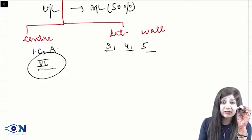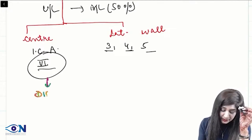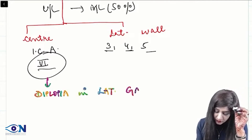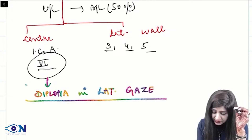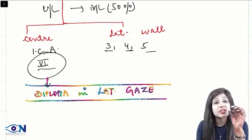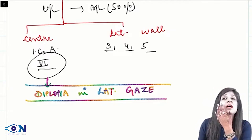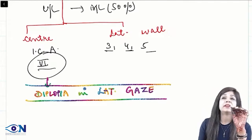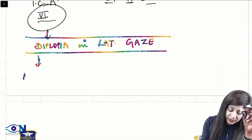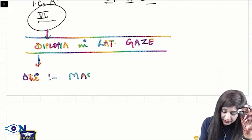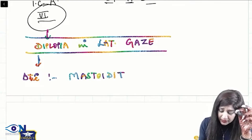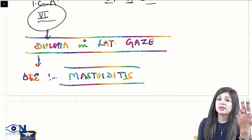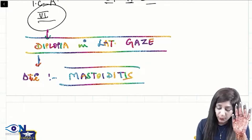The sixth nerve is the first to get affected. Due to sixth nerve involvement, we get diplopia in the lateral gaze — this is the first and very important manifestation of cavernous sinus thrombosis. The diagnostic feature is mastoiditis: you can confirm the diagnosis by tenderness at the mastoid process, and once the diagnosis is confirmed, treatment is straightforward.